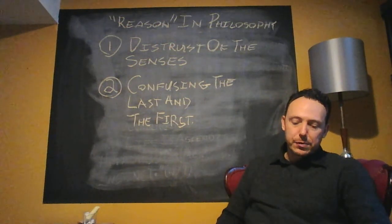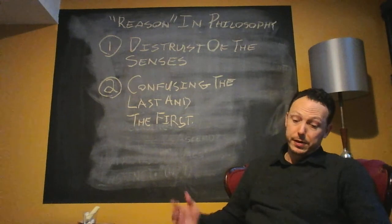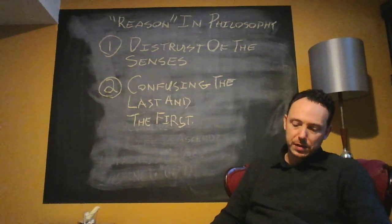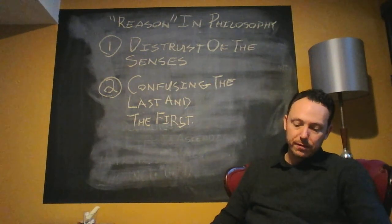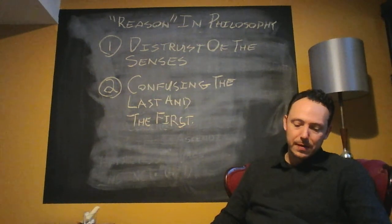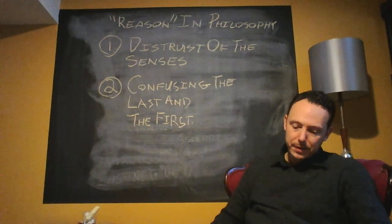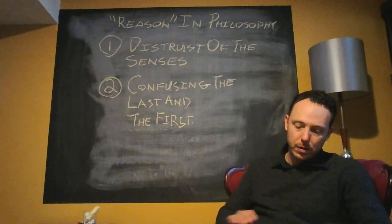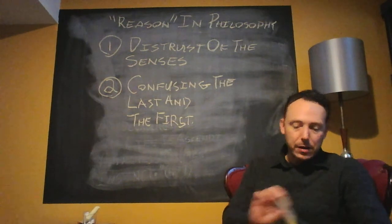Okay, second idiosyncrasy, section 4, page 481, the other idiosyncrasy of the philosophers is no less dangerous. It consists in confusing the last and the first. They place that which comes at the end, unfortunately, for it not come at all. Namely, the highest concepts, which means the most general, the emptiest concepts, the last smoke of evaporating reality in the beginning as the beginning. This, again, is nothing but their way of showing reverence. The higher may not grow out of the lower, may not have grown at all.